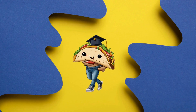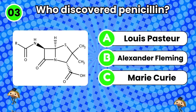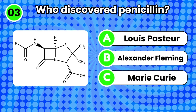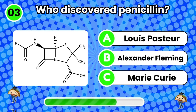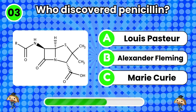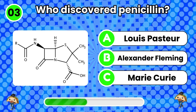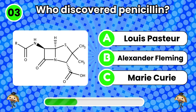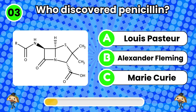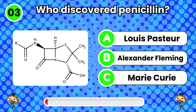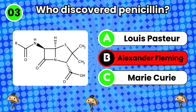Next question. Question 3. Who discovered penicillin? Alexander Fleming. That's right!